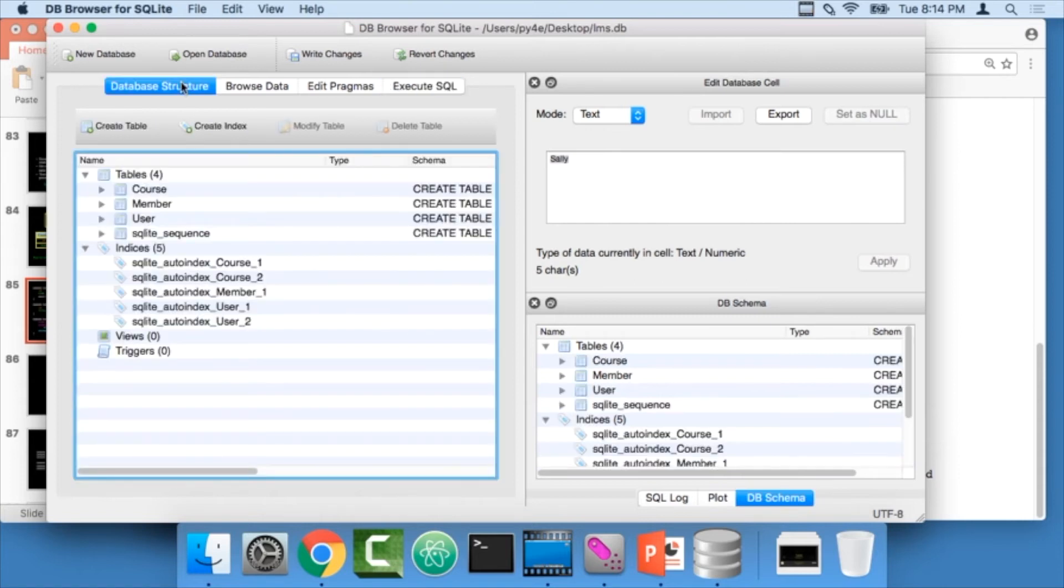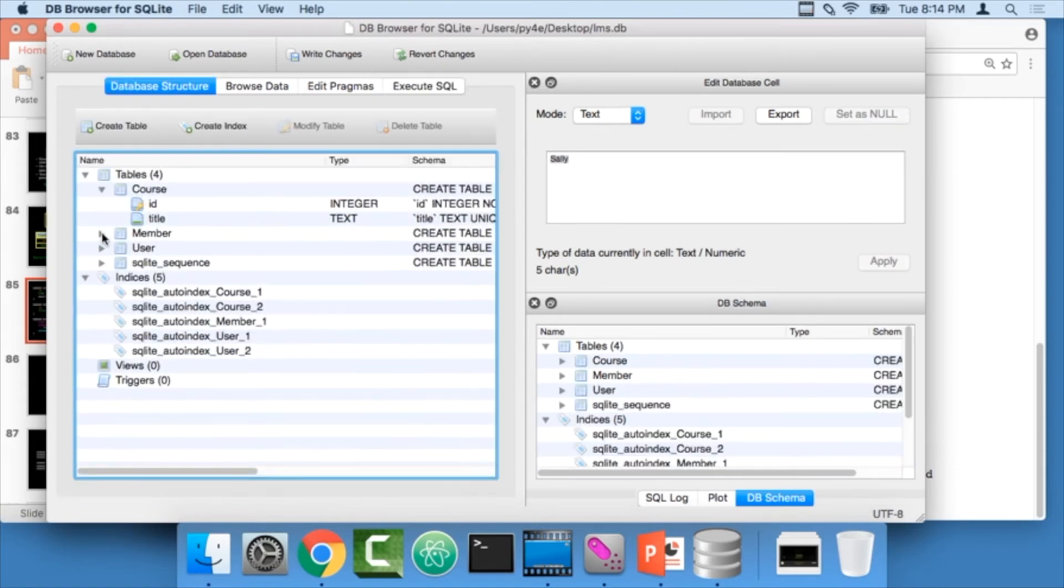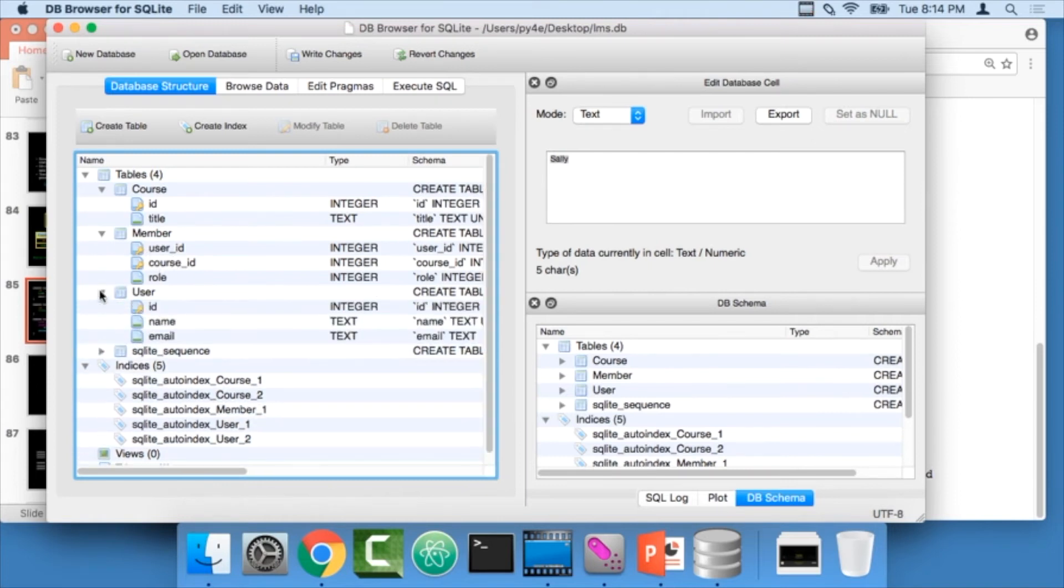I'll put a semicolon at the end of each one of the statements and I'm going to run them. Does it look good? So I got a course, I got membership with two foreign keys, and I got user. So that all looks good.